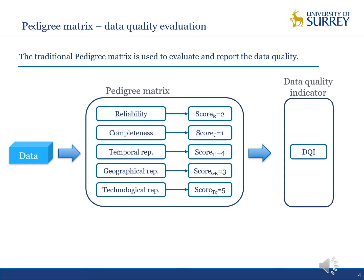An expert uses the scaling method to generate the quality indicator, which represents the quality level of the data. However, we think this method is a posterior evaluation because it is done after the use of the data, and has nothing to do with the selection of more appropriate data. The question here is about how to select the right data at the right place.